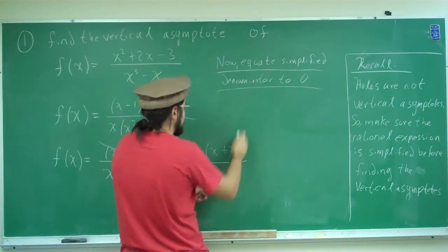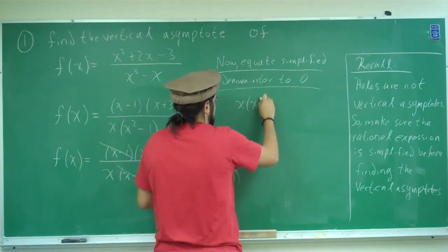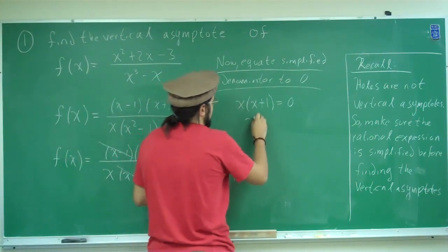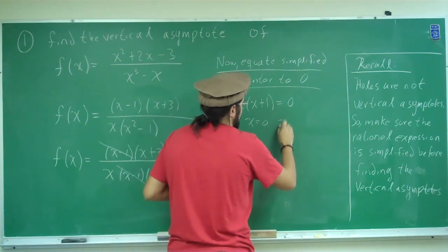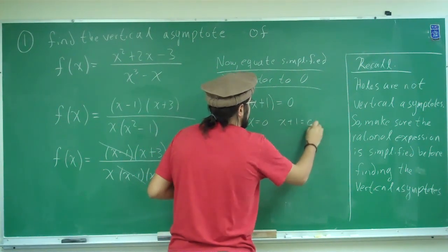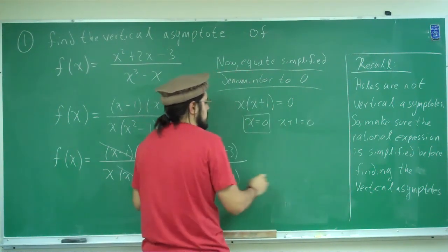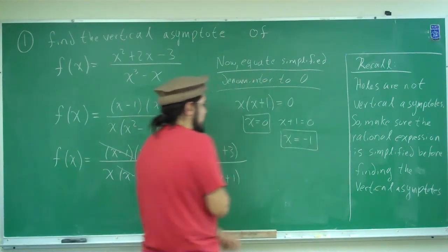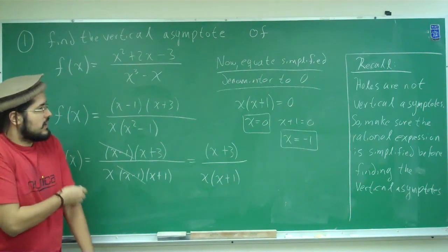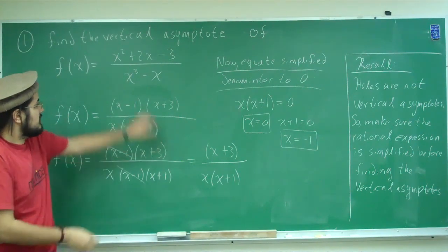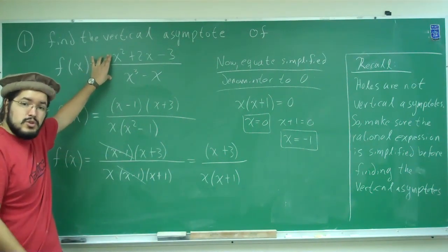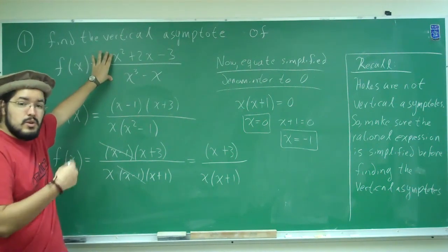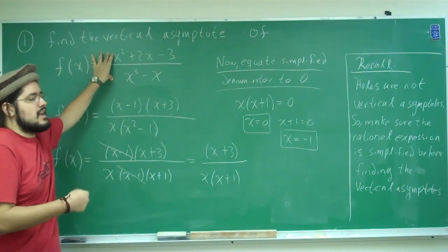We grab the simplified denominator and equate it to zero. We obtain x equals 0, which is one vertical asymptote, and x plus 1 equals 0, giving x equals negative 1 as another vertical asymptote. So it's very important to always simplify a rational expression before finding vertical asymptotes, because there might be holes and those holes are not vertical asymptotes.